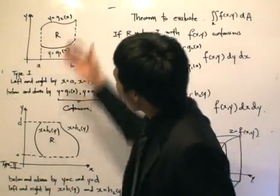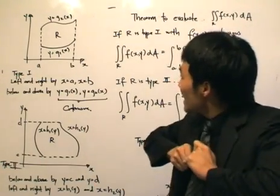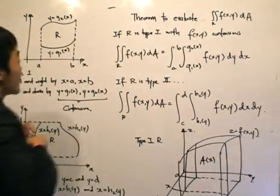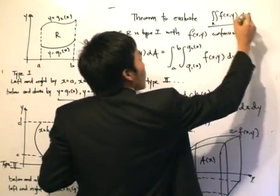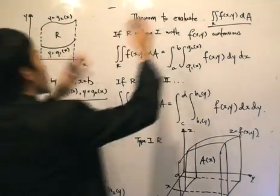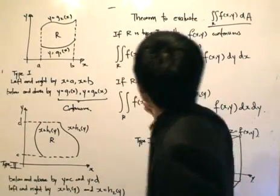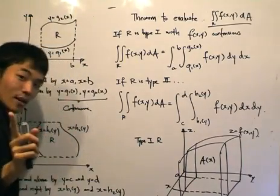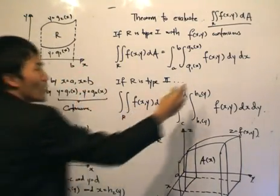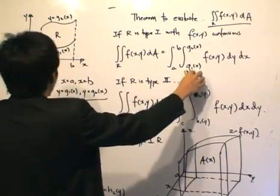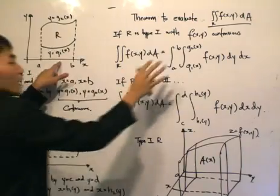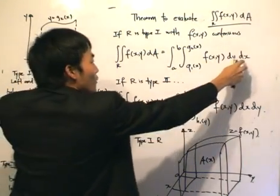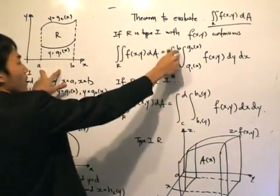So these are the two regions we are concerned with, type 1 and type 2. What I'm going to say now is possibly the most important theorem when dealing with double integrals. If we want to evaluate the double integral of f over the area R, and R is a type 1 region, the double integral is going to equal — first integrate the function f with respect to y from g1 to g2, and then integrate with respect to x from a to b.